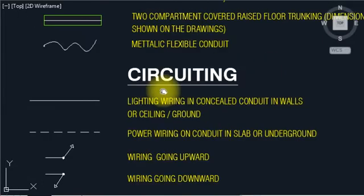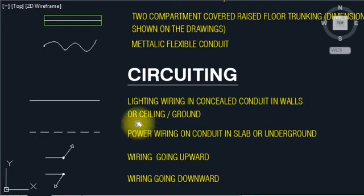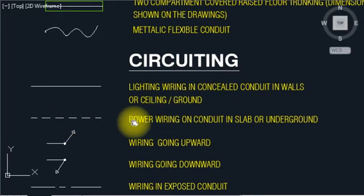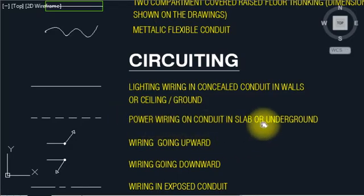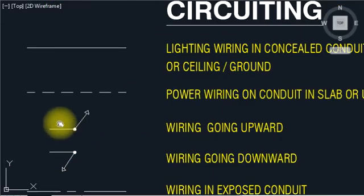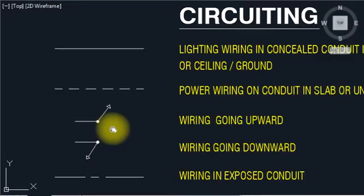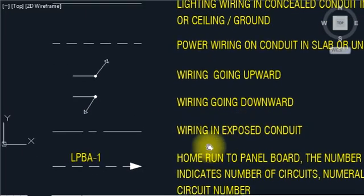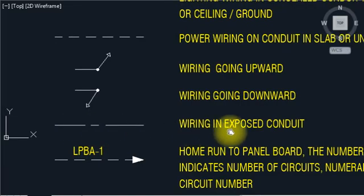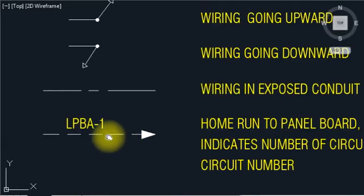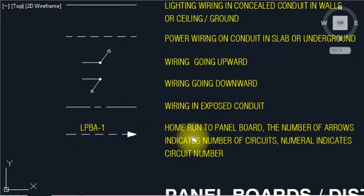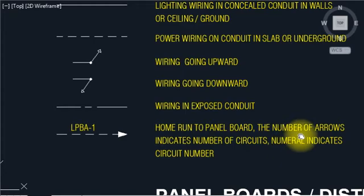Now circuiting — lighting wire of concealed conduit in the wall or ceiling mount. Double lines, waterline is shown here. Power wiring and conduit in ceiling or underground. Wiring going upward, wiring going downward, wiring exposed conduit. This is LBPA1 compartment and panel boards — the number of arrows indicates the number of circuits, normal integrated circuit.